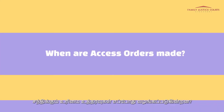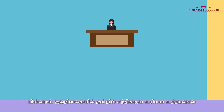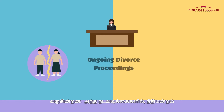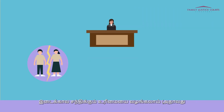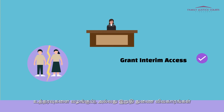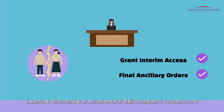When are Access Orders made? Access Orders may be made in one of the following two situations. First, where there are ongoing divorce proceedings. In those proceedings, the court may either grant interim access, which means the court will make temporary access orders until the completion of the matter, or make access orders as part of the final ancillary orders, which is when the divorce proceedings are fully completed and finalized by the court.